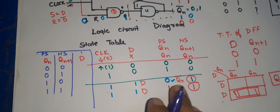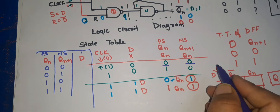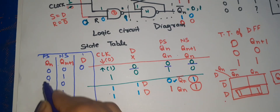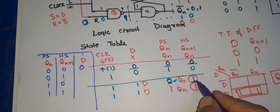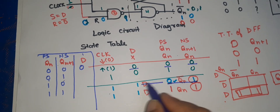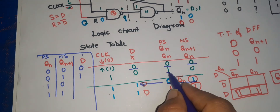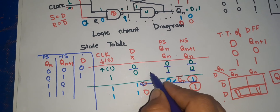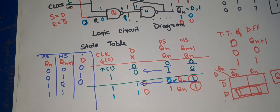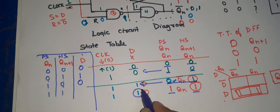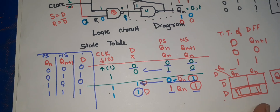Now from the characteristic table: when Qn is zero and Qn+1 is zero, D is zero. When Qn is zero and Qn+1 is one, D is one. When Qn is one and Qn+1 is zero, D is zero. When Qn is one and Qn+1 is one, D is one. This is the excitation table of the D flip-flop.